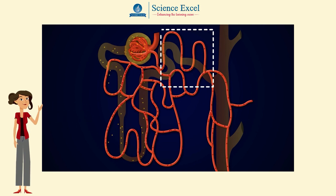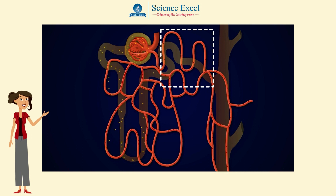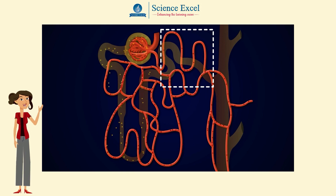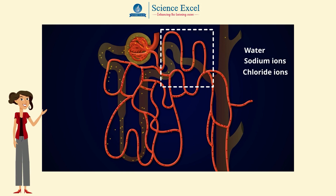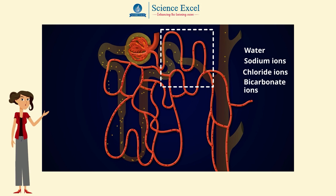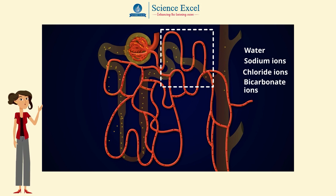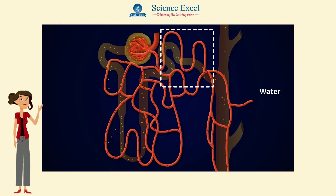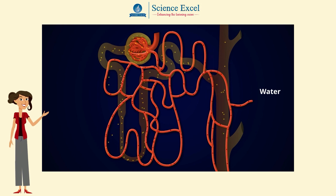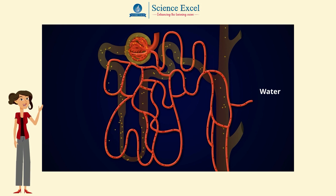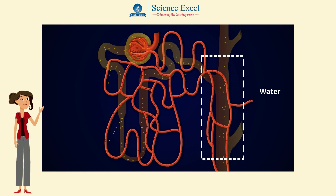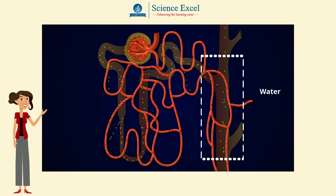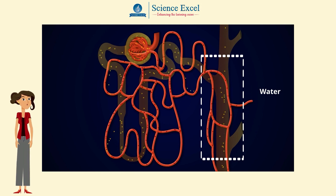The distal convoluted tubule helps in the reabsorption of more water and ions, and also reabsorbs bicarbonate ions. Large amounts of water are reabsorbed by the collecting ducts. By this time, the filtrate becomes very concentrated.